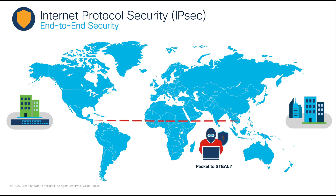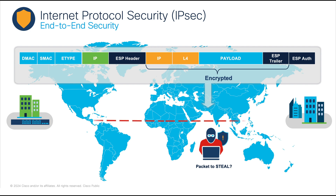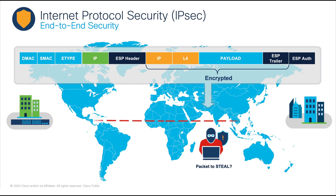Therefore, the need for a secure connection ensuring data confidentiality, integrity, and authenticity becomes paramount. And that's precisely what Internet Protocol Security accomplishes. IPsec is a protocol that encrypts sensitive information, preventing unwanted monitoring across the public internet. It also swiftly authenticates data, ensuring that it originates from a known sender. Organizations use IPsec to protect against replay attacks or man-in-the-middle attacks, thanks to its mature protocol suite that supports a range of encryption and hashing algorithms.